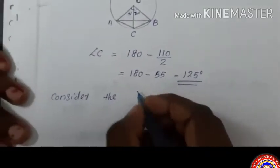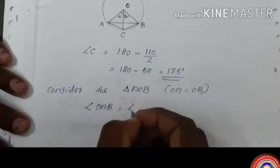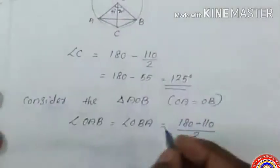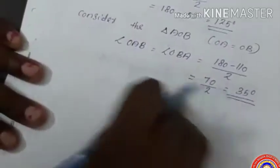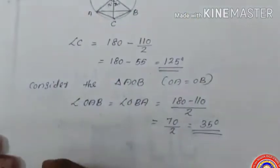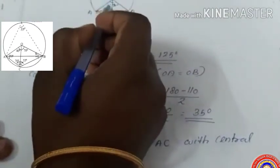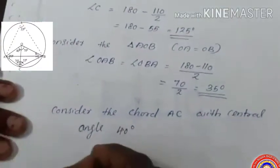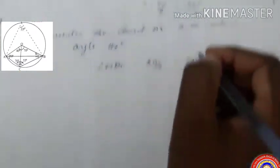Consider the isosceles triangle AOB, where OA equals OB. Angle OAB equals angle OBA equals (180 minus 110) divided by 2 equals 70/2 equals 35 degrees. Next, consider chord AC with central angle 40 degrees. Angle ABC is formed from the same chord AC to the same part of central angle AOC, and it equals half the central angle: 40/2 equals 20 degrees.